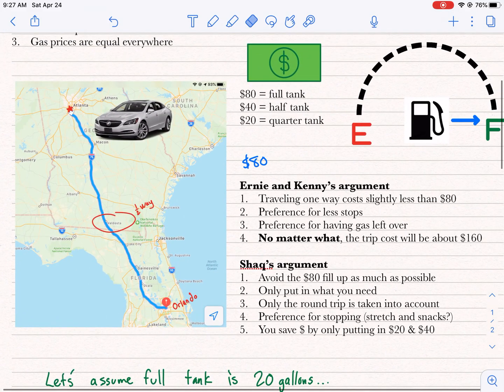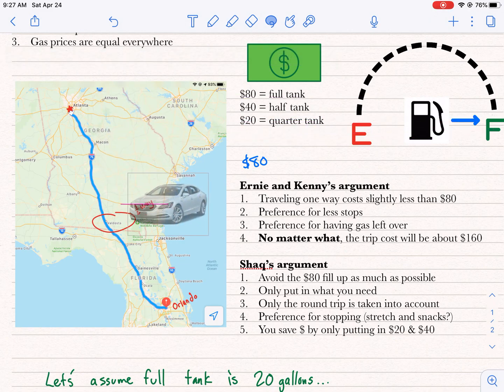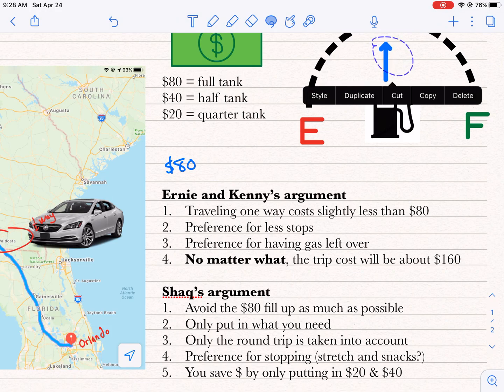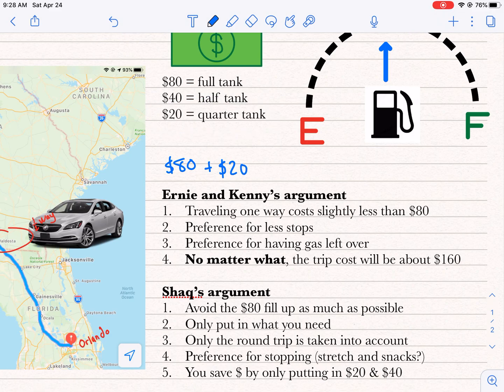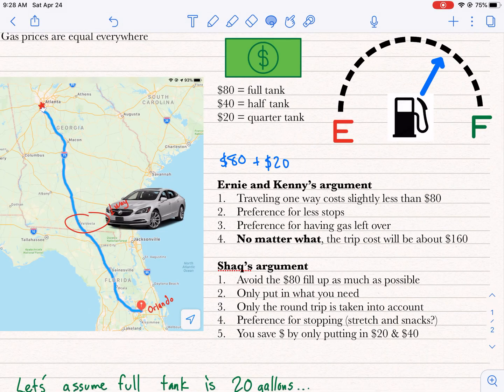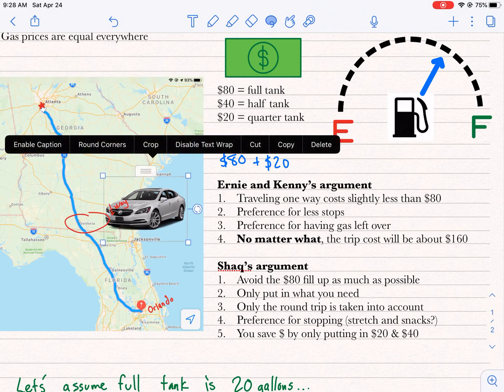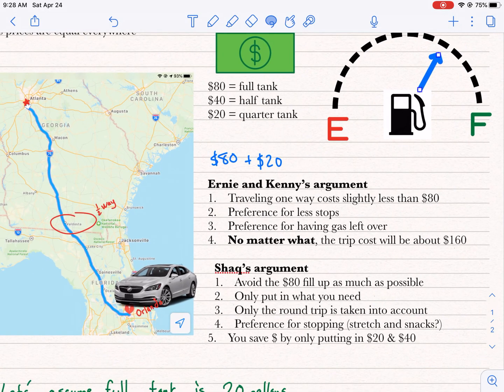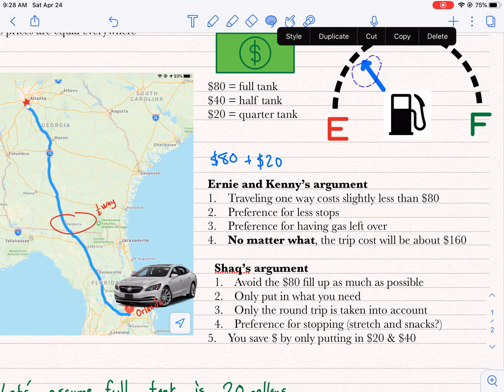Now, you start off in Atlanta. Shaq says you go from Atlanta and then you go to Valdosta. So you've spent half your gas. You're about half a tank. So if you're at half a tank, that means you got to put some gas in. But he says he's only going to put in $20. Well, $20 is only a quarter of a tank. So if you put in $20 in Valdosta, you're going to take it back up to three quarters of a tank. Now we're driving from Valdosta to Orlando, and we know that takes up half a tank. So three quarters minus a half will take us to one quarter.